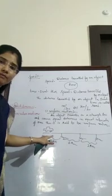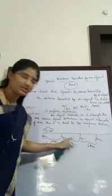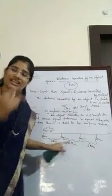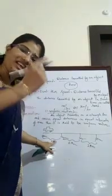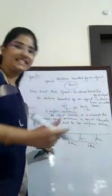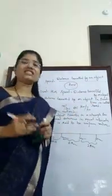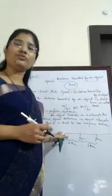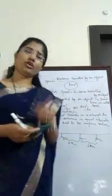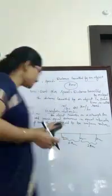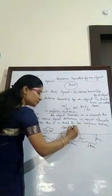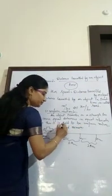So: 2 kilometers in 5 minutes, 2 kilometers in 5 minutes, 2 kilometers in 5 minutes. That object travels equal distances in equal intervals of time. Then we say that object is in uniform motion, meaning its speed remains constant.